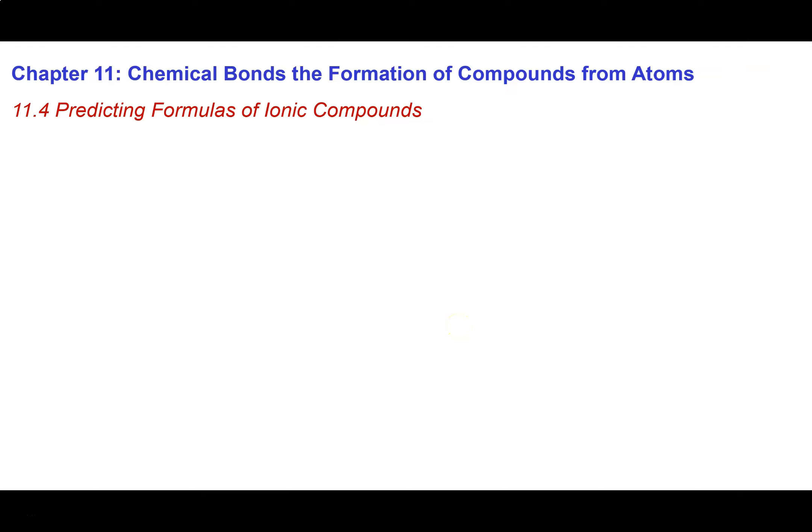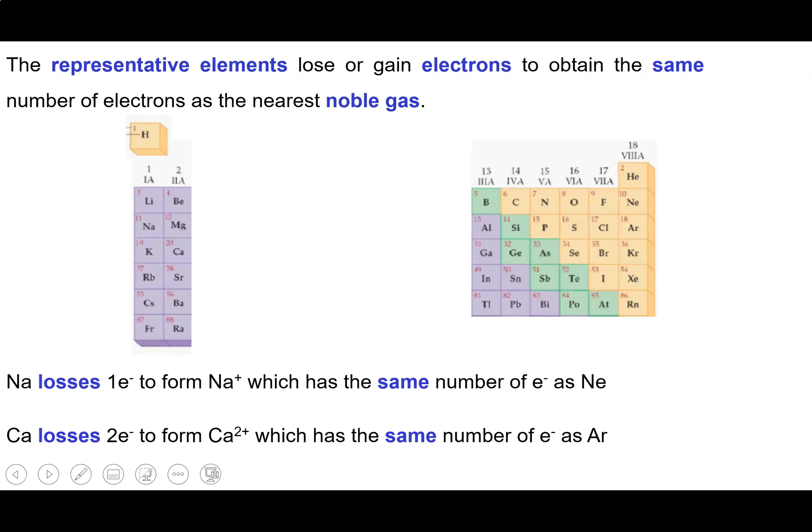In this section we're going to look at quick ways that we can predict the formula of an ionic compound that will form when a metal reacts with a non-metal. We did this before in the last video where we looked at the reaction between magnesium and chlorine and got the ratio of atom types involved. In this video we'll look at how we can speed up that process and eliminate the need to draw Lewis diagrams.